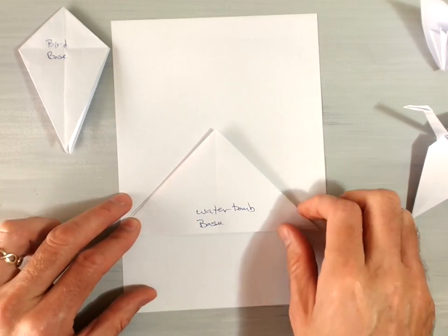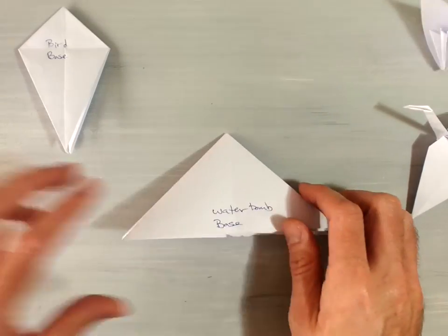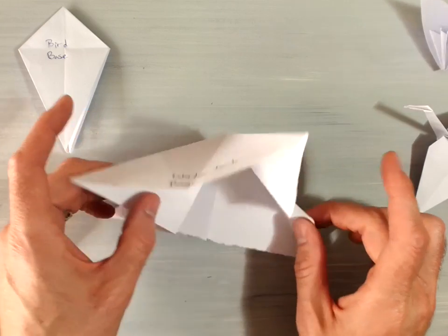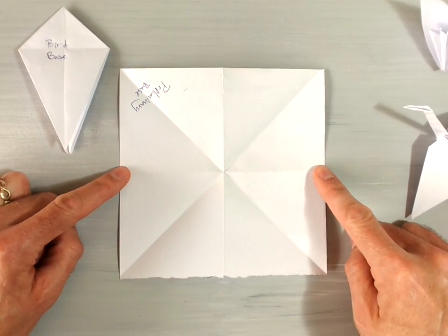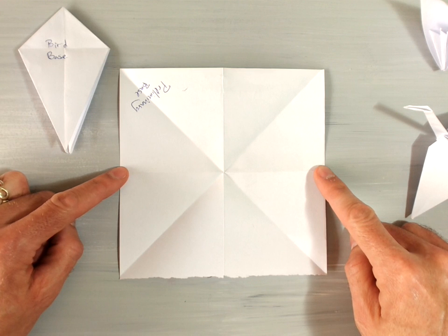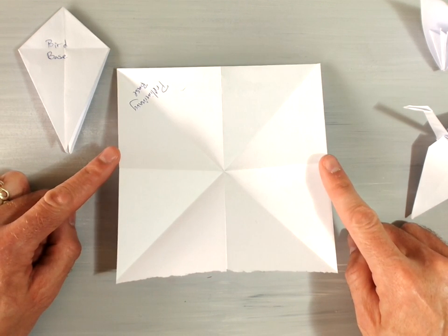This is one of the basic bases for origami. It's called the water bomb base. And if we are to open it up, we can see that there are some fractions going on here. So take a minute and discuss what the different fractions you can see in here are.